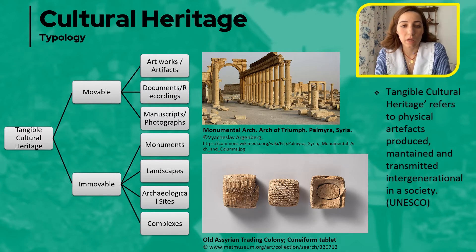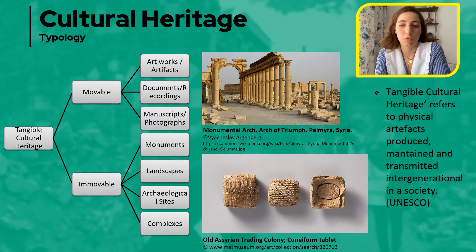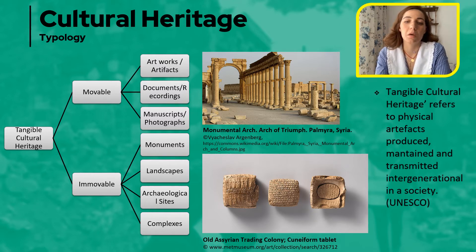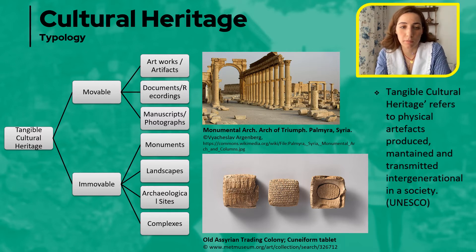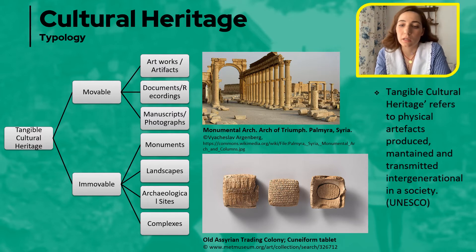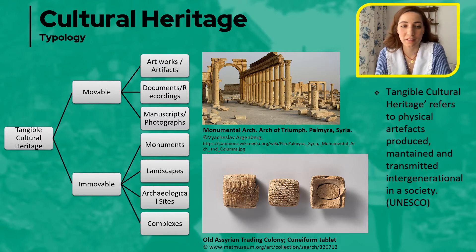Then we have the immovable section, which generally covers monuments, landscapes, archaeological sites, and historical complexes — which can be residential, educational, or religious. As you can see here, an example is the famous world heritage site of Palmyra in Syria, which unfortunately has been badly damaged due to conflict.